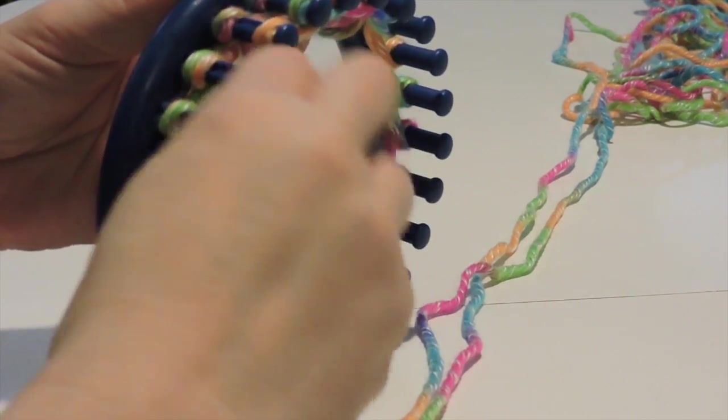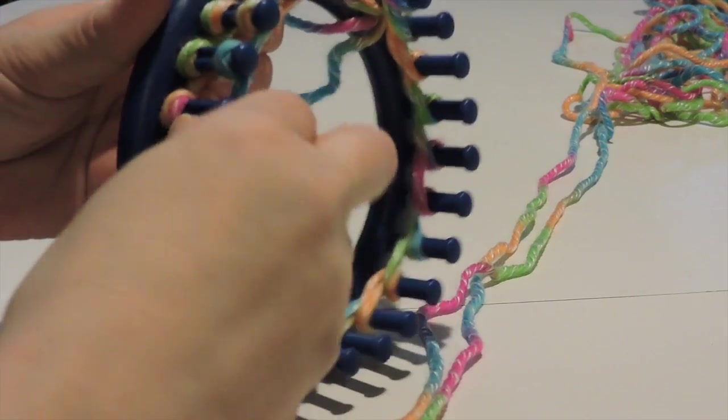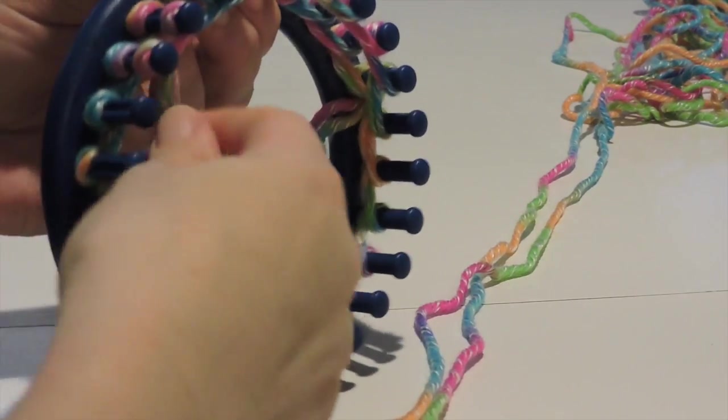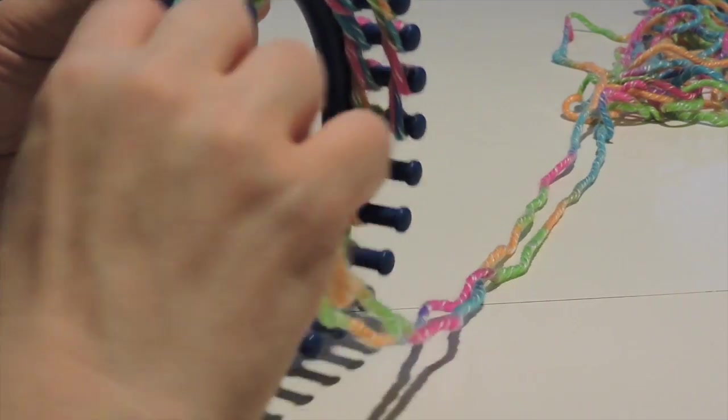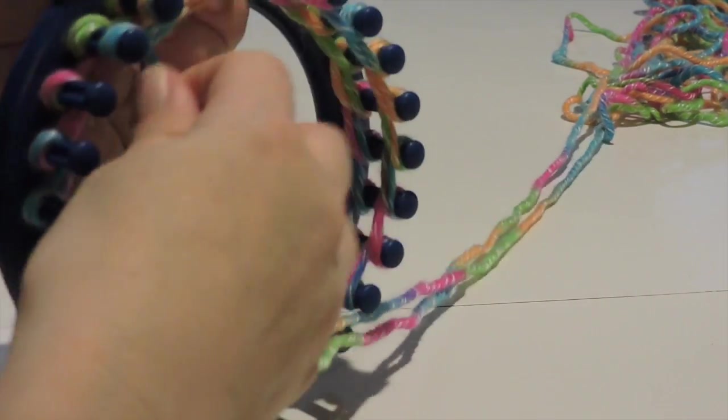So there's going to be two loops on our loom. And again, you're just going to continue wrapping all the way around until you make it back to the anchor peg.